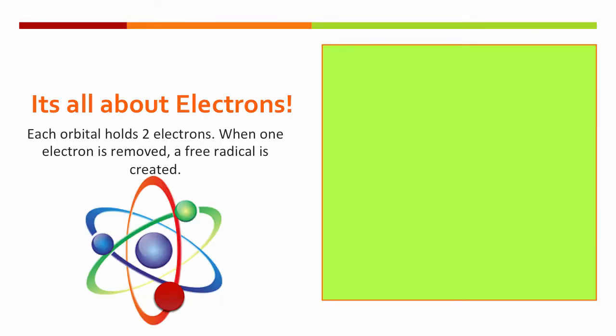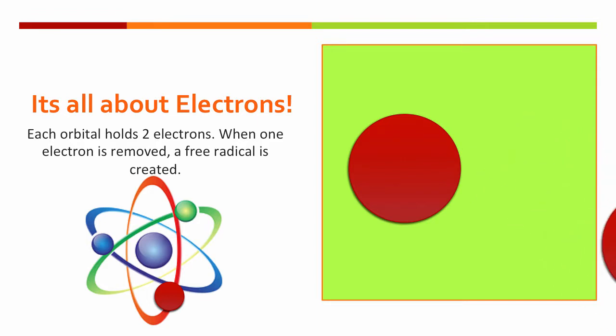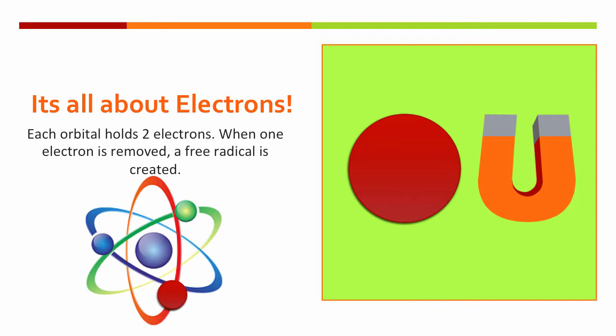As the previous slide alluded to, free radicals are all about the number of electrons atoms have. The green box to the right will represent an orbital — each orbital can hold up to two electrons. When one electron is removed, the empty space acts like a magnet and it pulls electrons from neighboring atoms to fill its empty space. This action creates a new free radical which will start a cascade of atomic and cellular damage throughout our body.